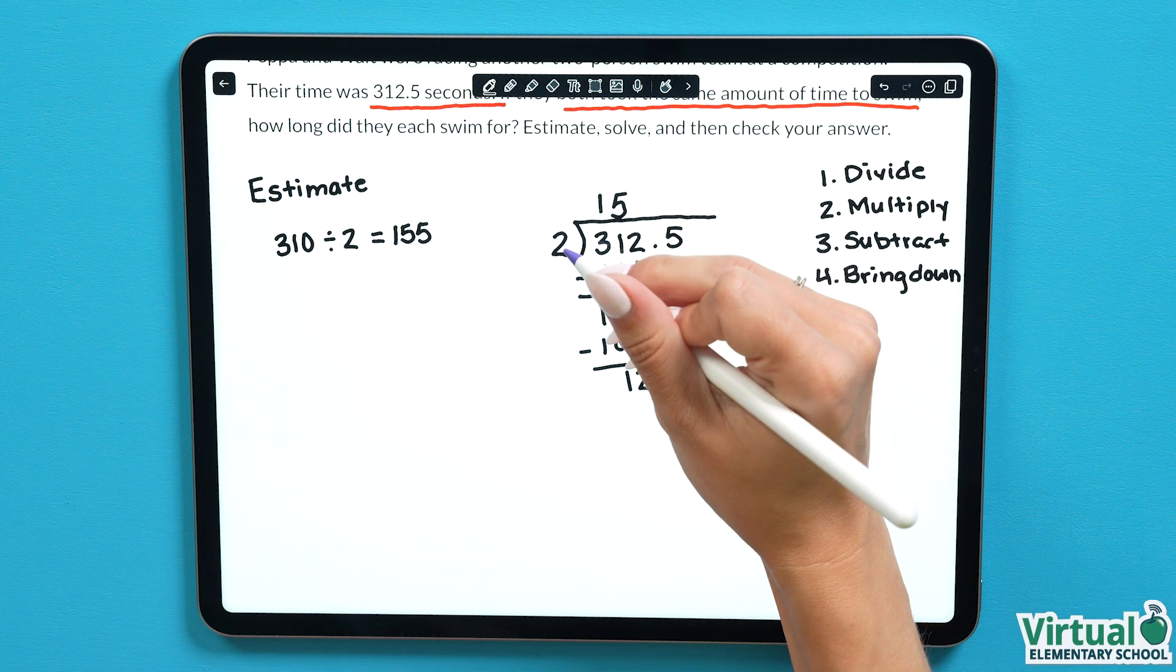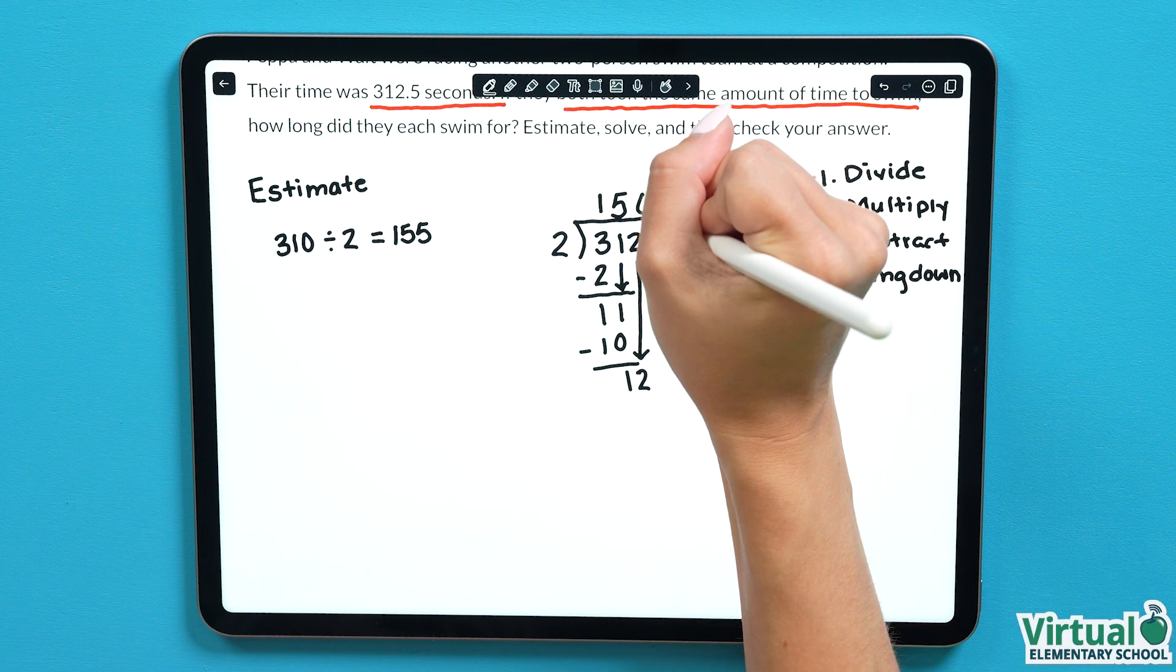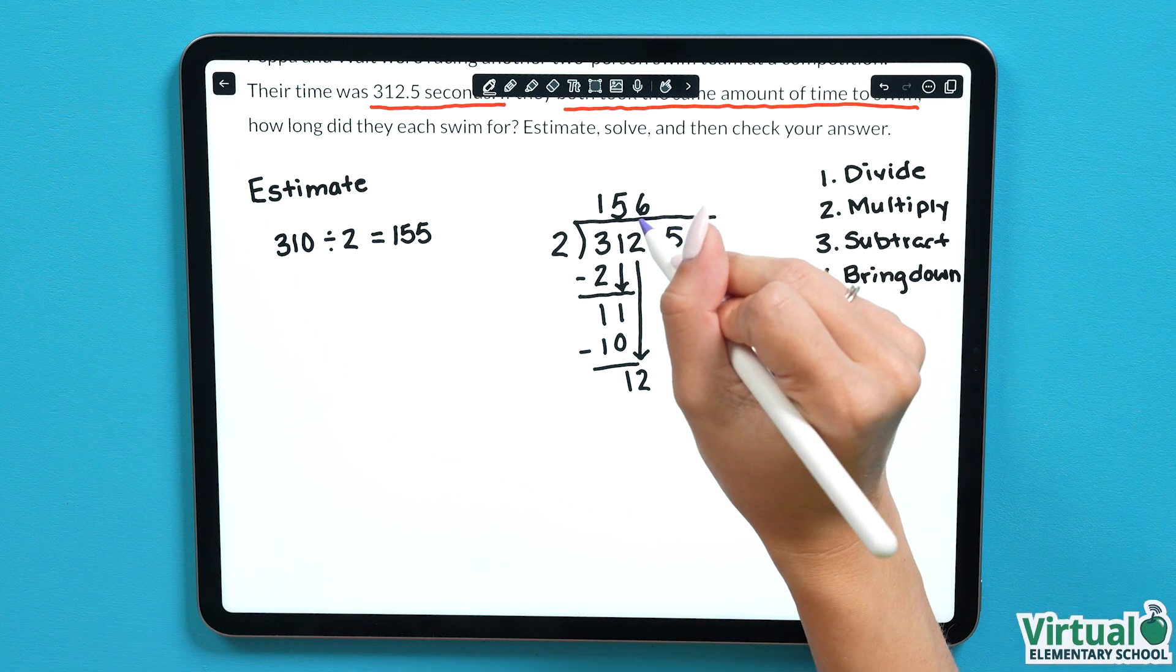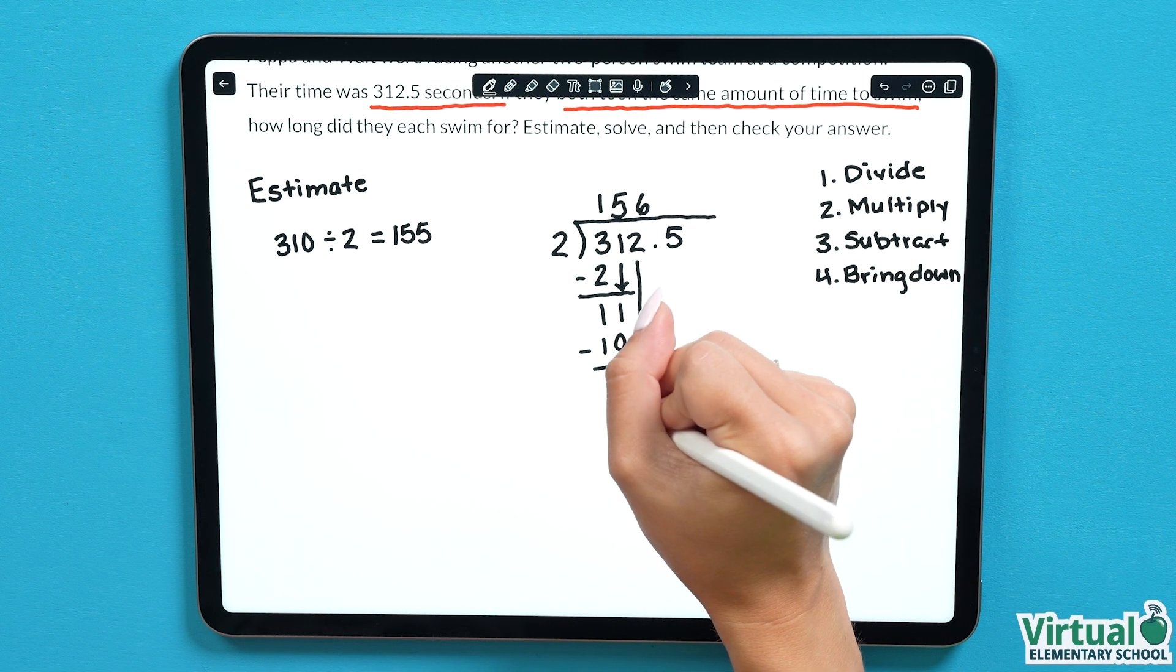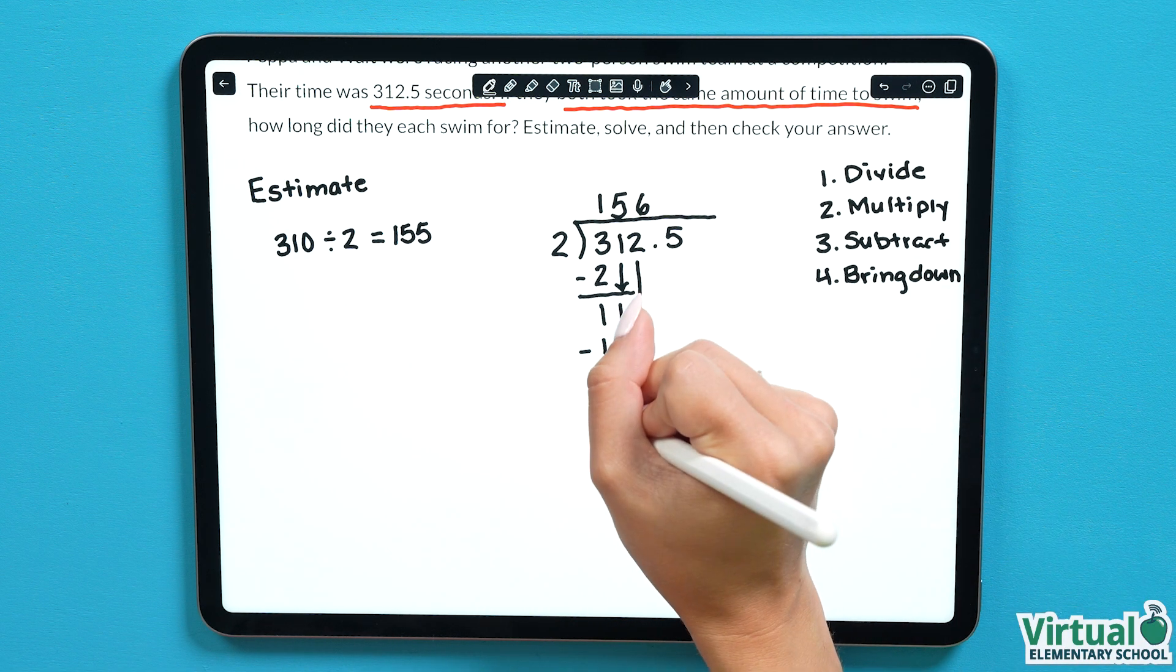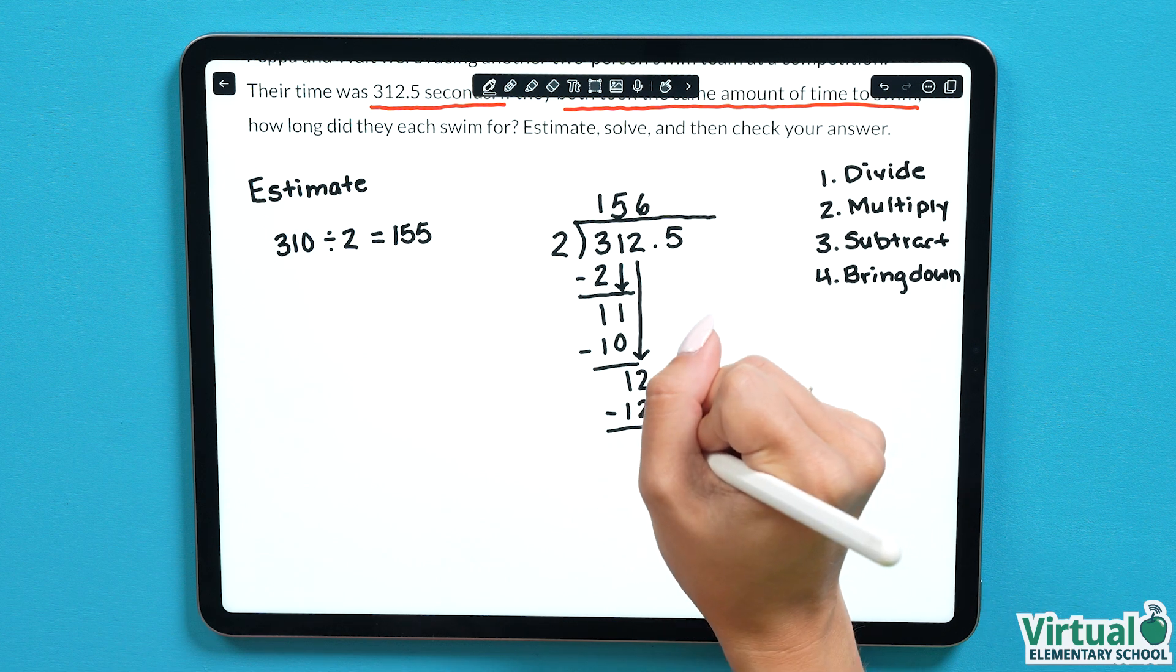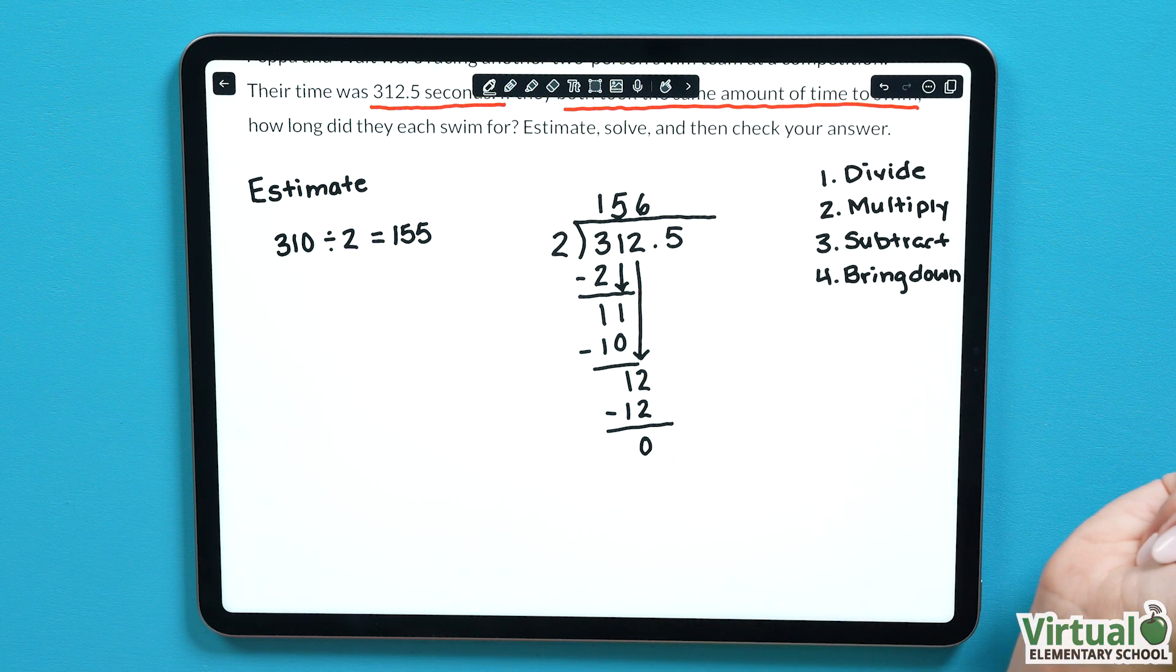Now we have 12, 12 divided by 2 is 6, which is an even amount. 2 multiplied by 6 gives us 12, we subtract, 12 subtract 12 equals 0.